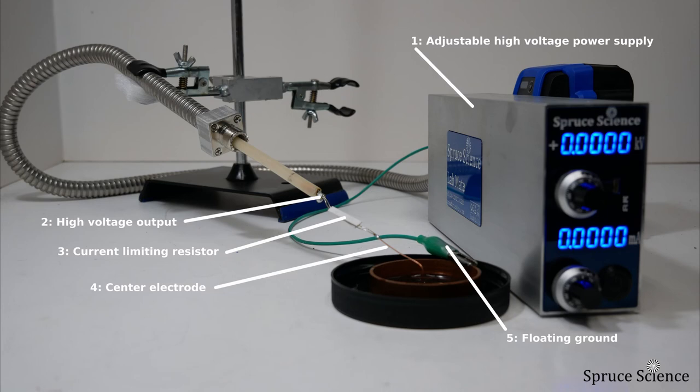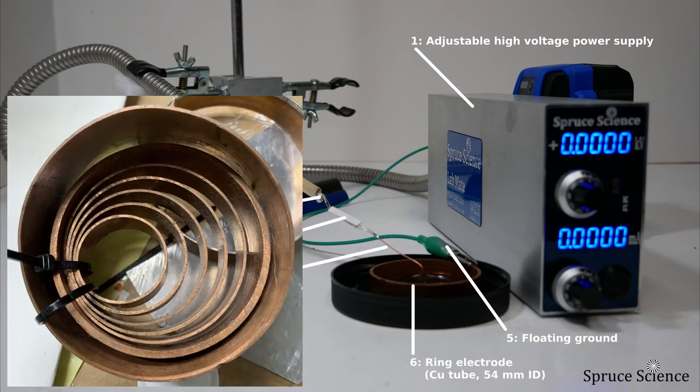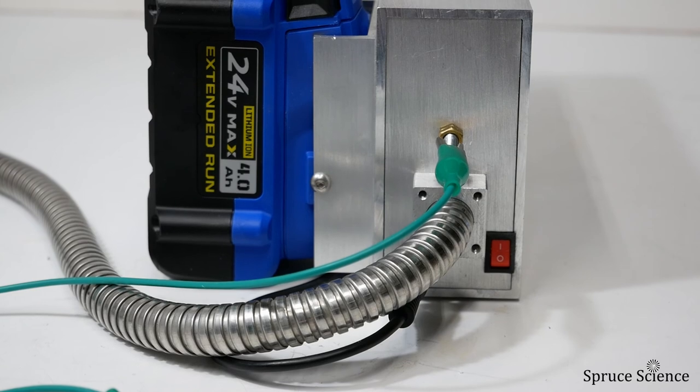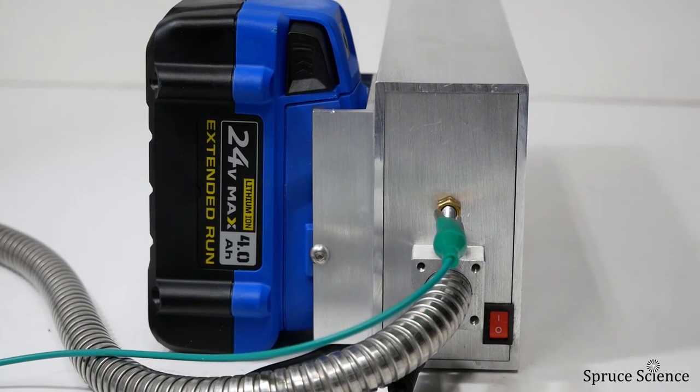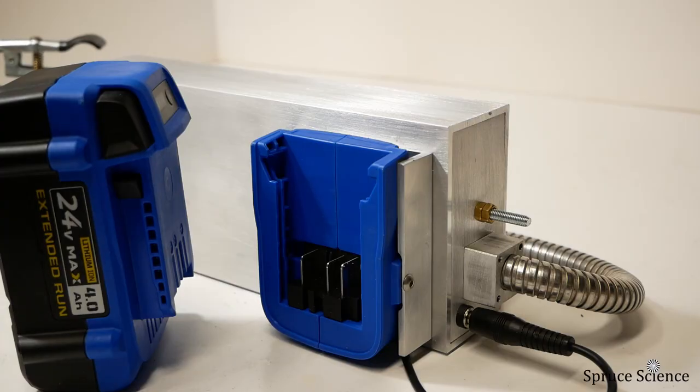This green wire connects the ring electrode to the ground stud on the back of the high voltage power supply. In this setup we're using a lithium ion battery to power the high voltage power supply because the portability makes it easy to run experiments.